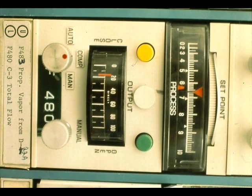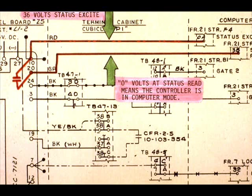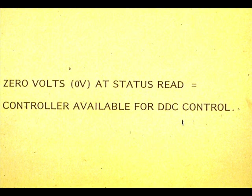When the Veritrack controller is in computer mode, a contact opens between status excite and status read. The computer senses zero volts and knows the controller is available for DDC control.